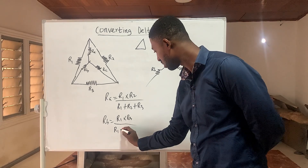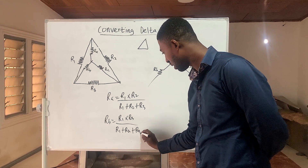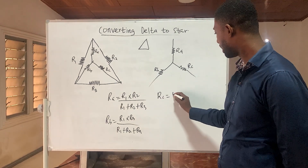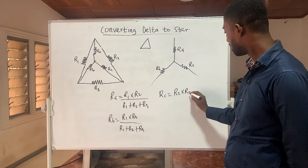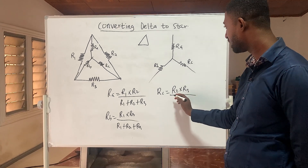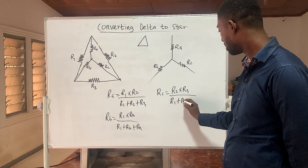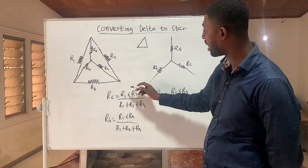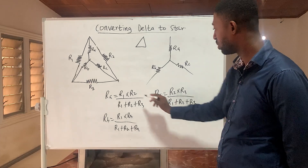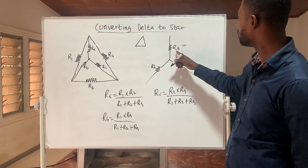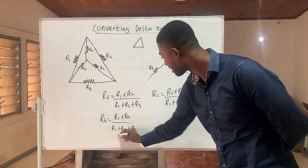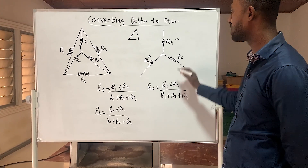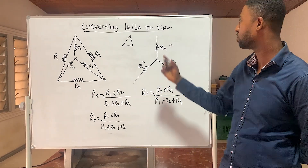Then to calculate for RC, RC equals the product of R2 times R3, all over the sum of all resistors. After assigning values to R1, R2, and R3 and simplifying, you get the answers for RA, RB, and RC. Let's take one question and see how to convert from delta to star.